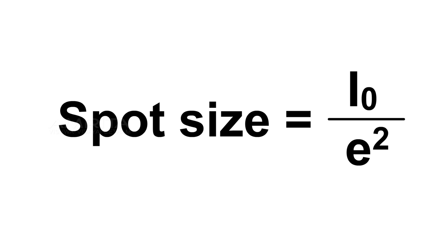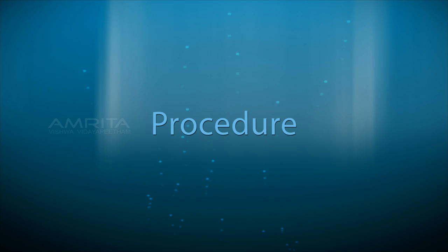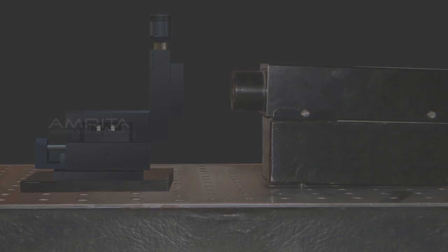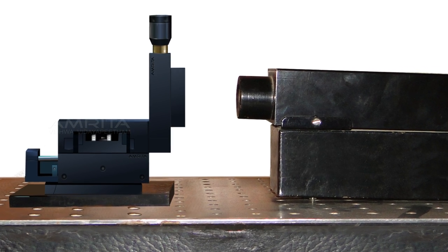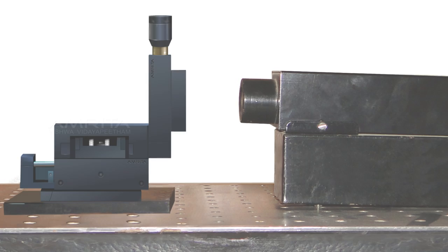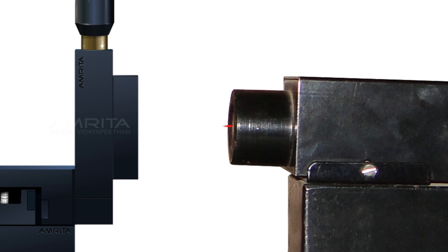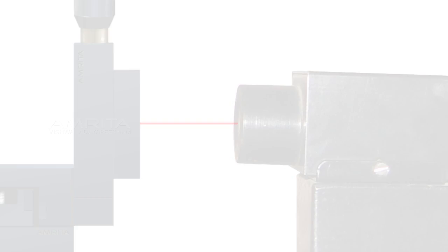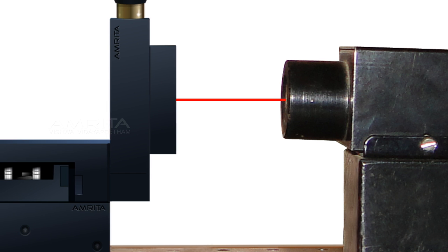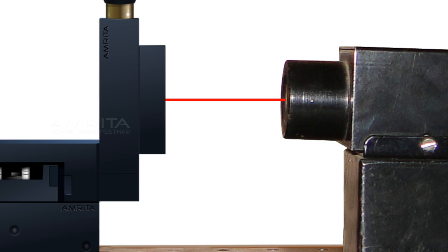Procedures: Number one, set a laser and a detector for measuring the intensity on an optical breadboard. Number two, align the laser beam in such a way that the laser beam can fall on the detector. Number three, fix a distance for the detector and take intensity measurements of the beam along a horizontal line passing through the point with maximum intensity.